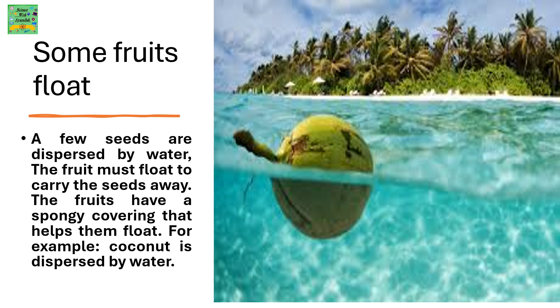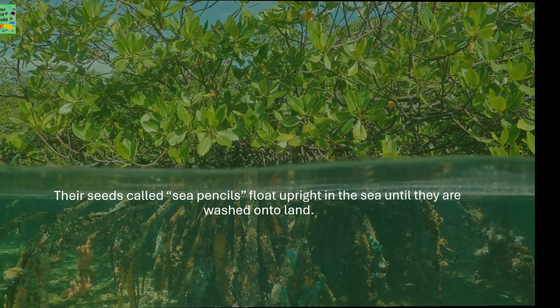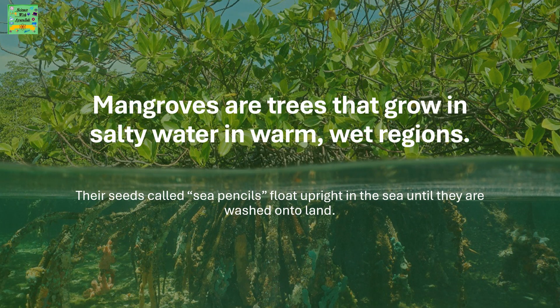There are some fruits that float. A few seeds are dispersed by water. The fruits must float to carry the seeds away, and they have a spongy covering that helps them float. For example, coconut is dispersed by water. Mangroves are trees that grow in salty water in warm, wet regions. Their seeds, called sea pencils, float upright in the sea until they are washed onto the land.